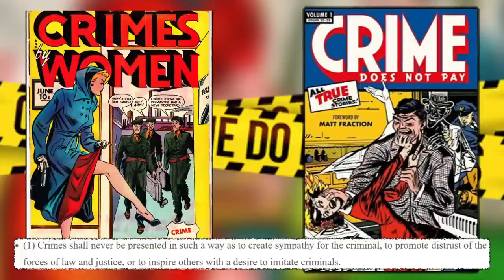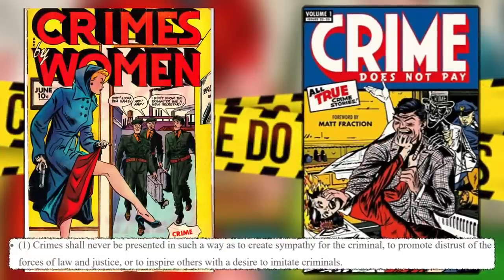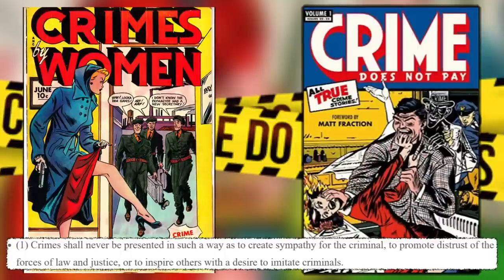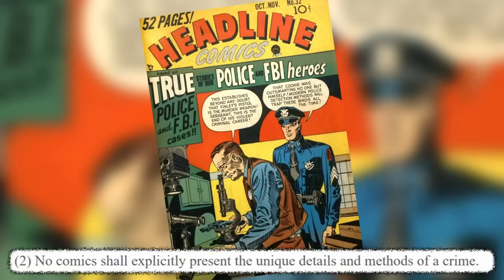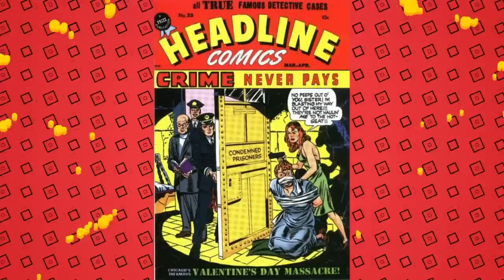Code for editorial matter, General Standards Section A — these are the rules that are going to hit the horror and crime genres and just decimate them. Rule one: crime shall never be presented in such a way as to create sympathy for the criminal, to promote distrust of the forces of law and justice, or to inspire others with a desire to imitate criminals. No cool criminals. Rule two: no comics shall explicitly present the unique details and methods of a crime — so the golden age habit of going into forensic detail like an episode of 'Forensic Files'? No more of that.